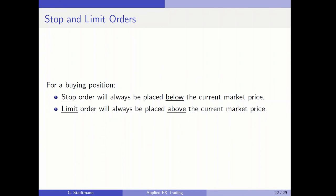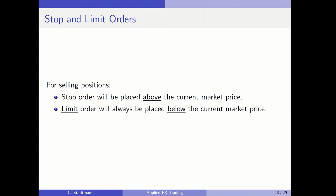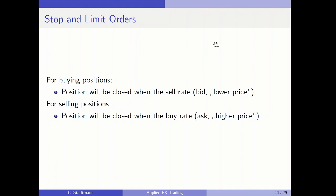For a buying position, the stop order is always placed below the current market price and the limit order is always placed above the current market price. For a short (selling) position, the stop order is placed above the current market price and the limit order below it. For buying positions the position closes when the sell rate (bid) is reached; for selling positions, the position closes when the buy rate (ask) is hit.